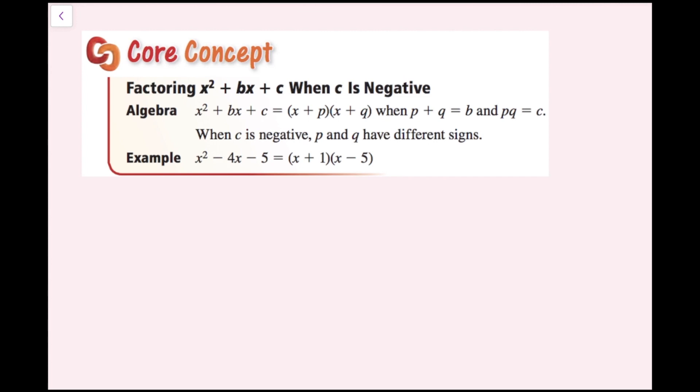Factoring x squared plus bx plus c when c is negative: x squared plus bx plus c equals x plus p times x plus q when p plus q equals b and p times q equals c. When c is negative, p and q have different signs. For example, x squared minus 4x minus 5 factors with one value of negative 5 and one of positive 1 — different signs.